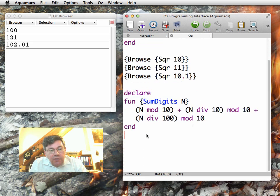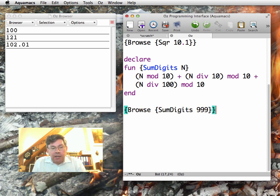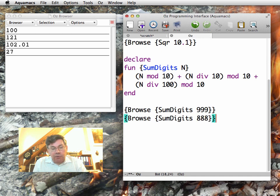For example, I can do sum digits of 999, and this returns 27. Sum digits of 888 returns 24. So the sum of the three digits.